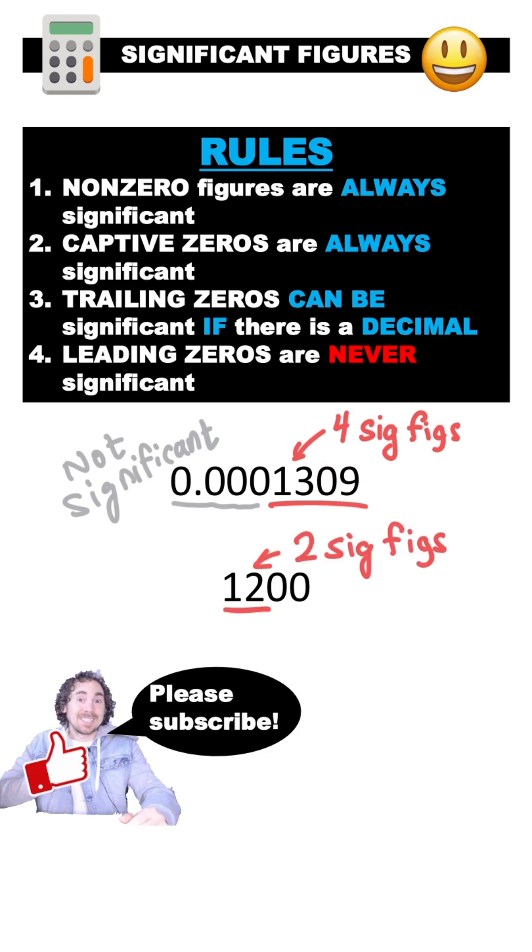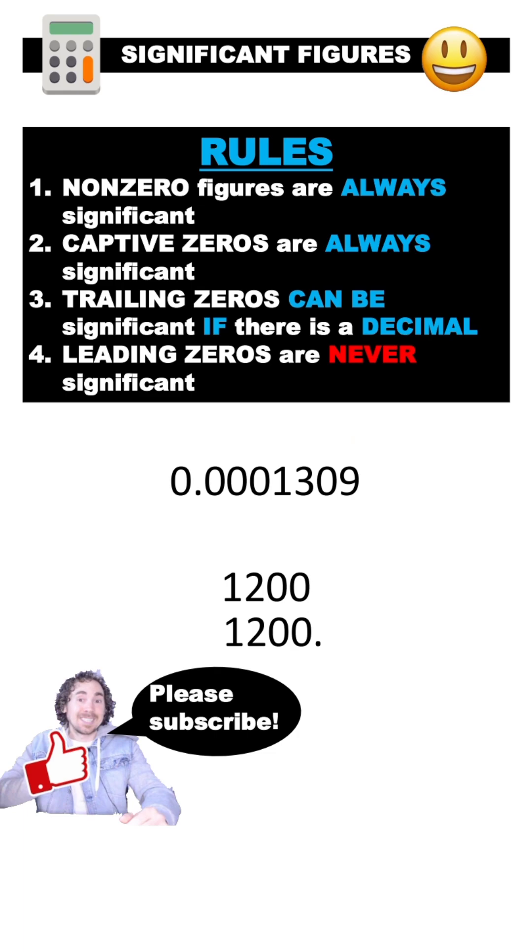The second measurement only has two significant figures. The trailing zeros are not significant. Generally, trailing zeros are only significant when the decimal is drawn into the measurement. So you can make them significant by adding a decimal at the end. It looks weird, but that's the difference.